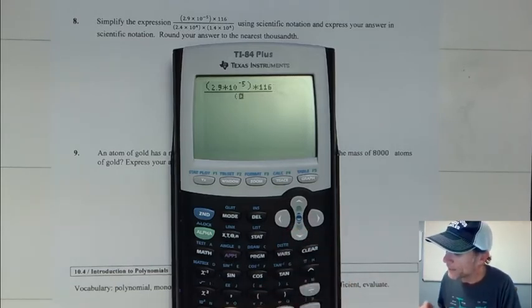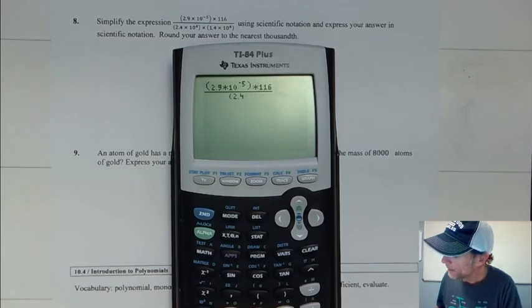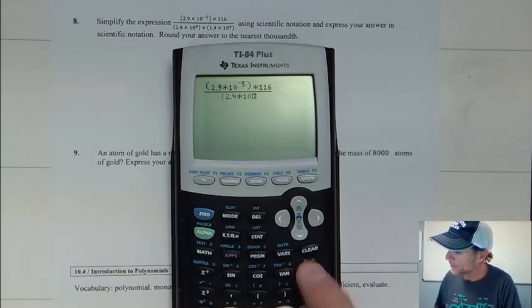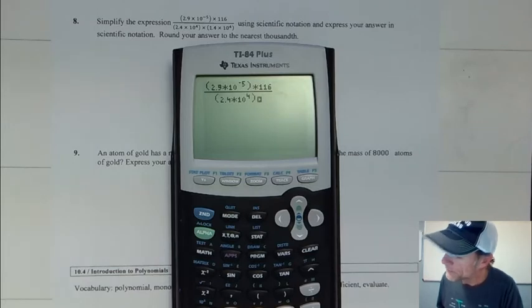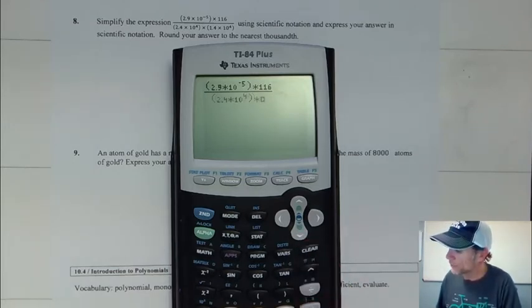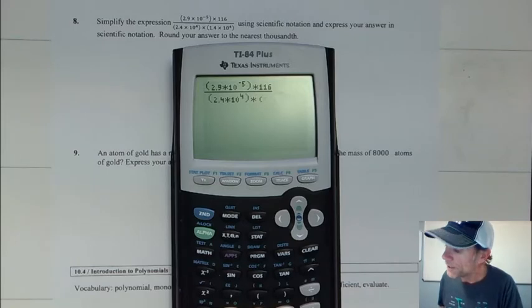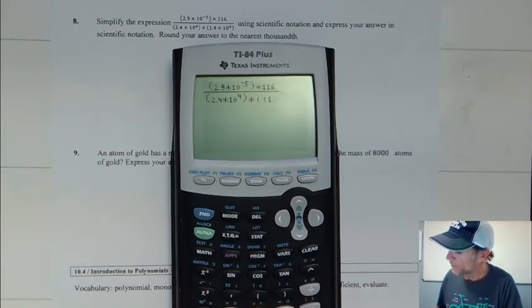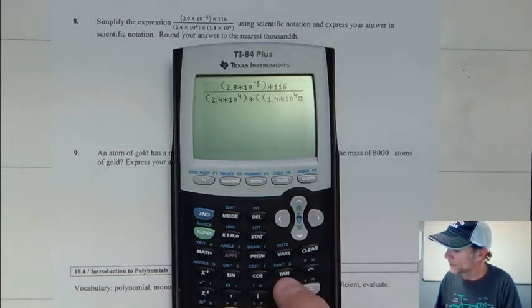And then we have times 116, and on the denominator we have 2.4 times 10 raised to the fourth. I'll hit my right arrow, and times, we don't have to put the times sign in, it won't hurt anything if we do, and then we have parentheses 1.4 times 10 raised to the fourth, and then we want to end that parentheses.